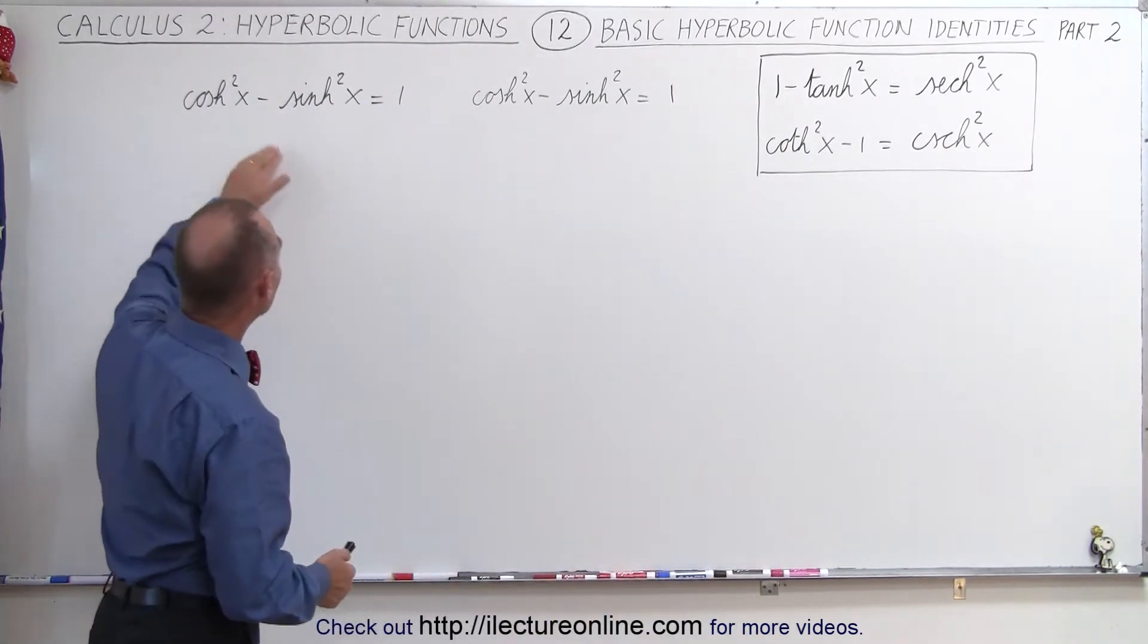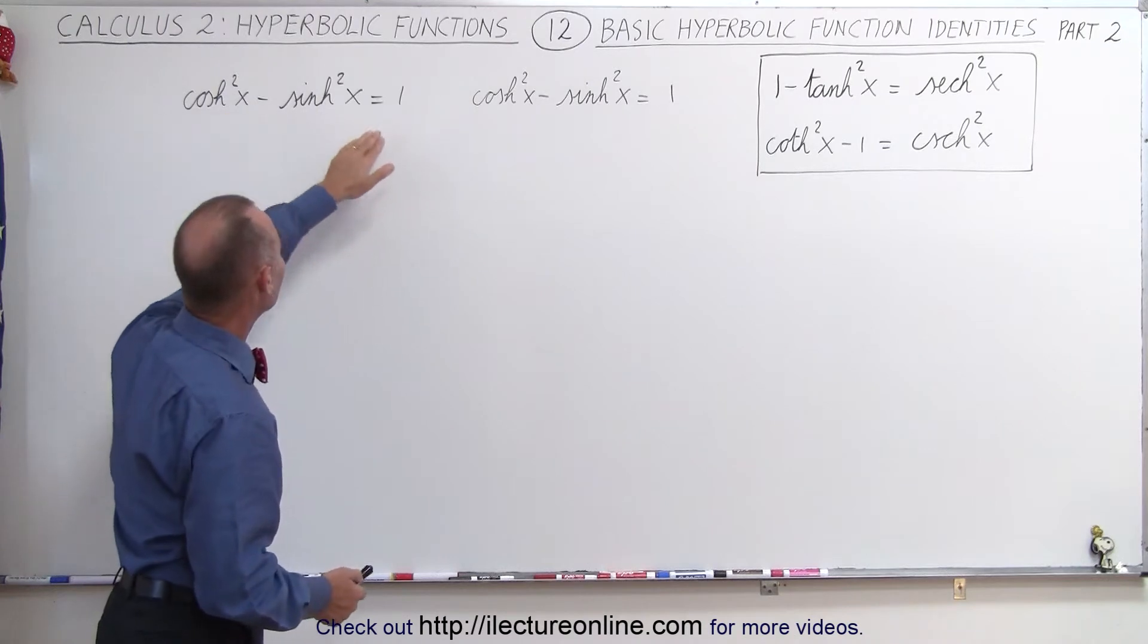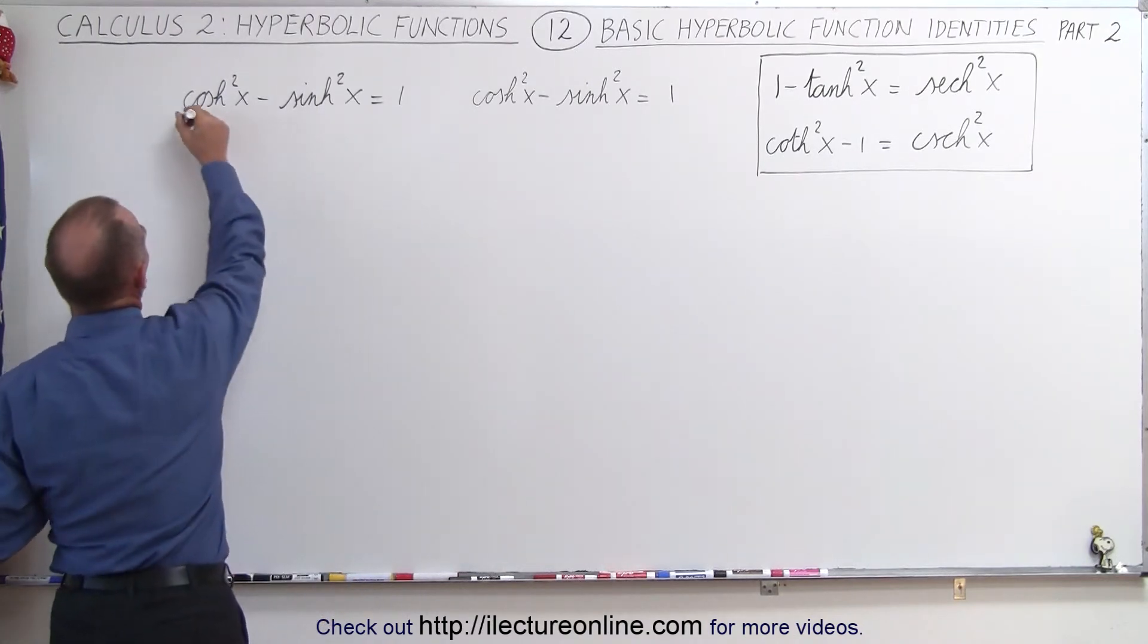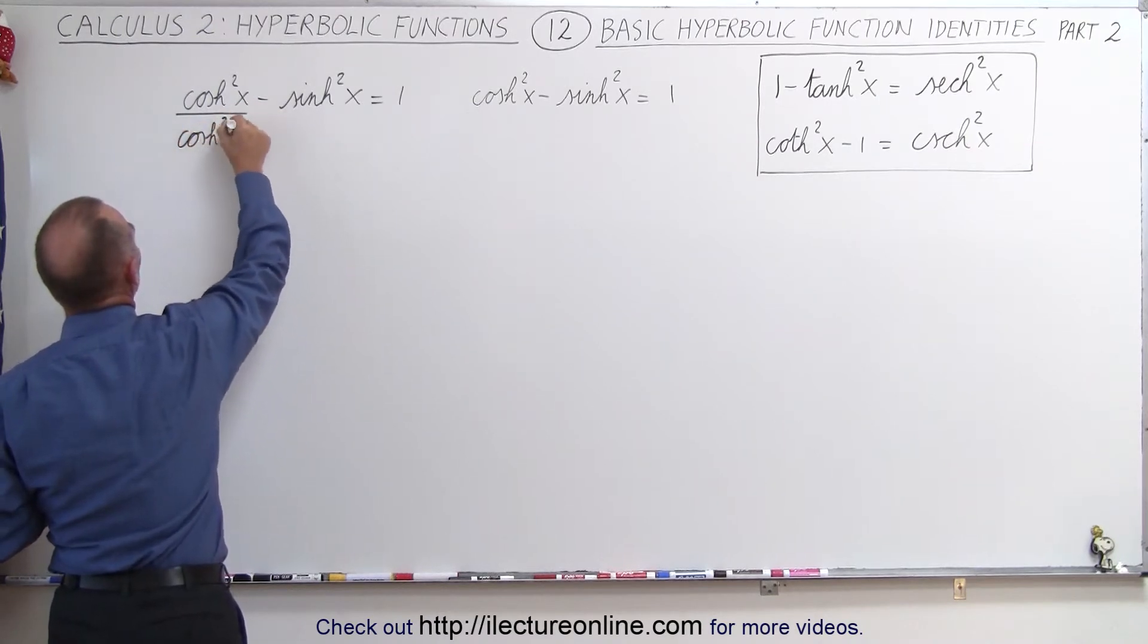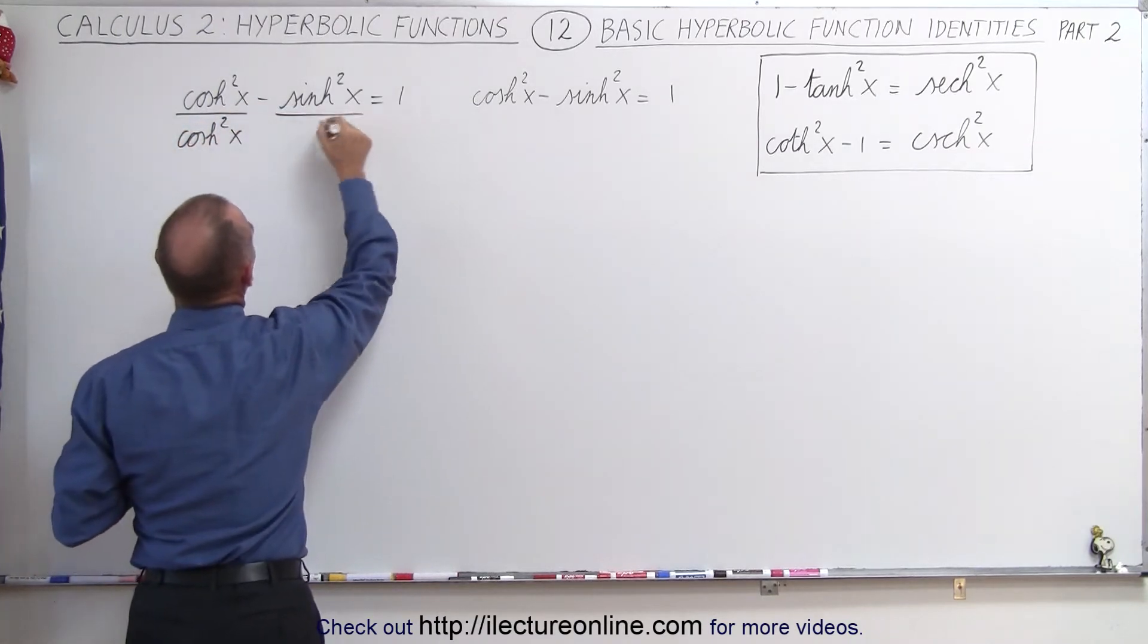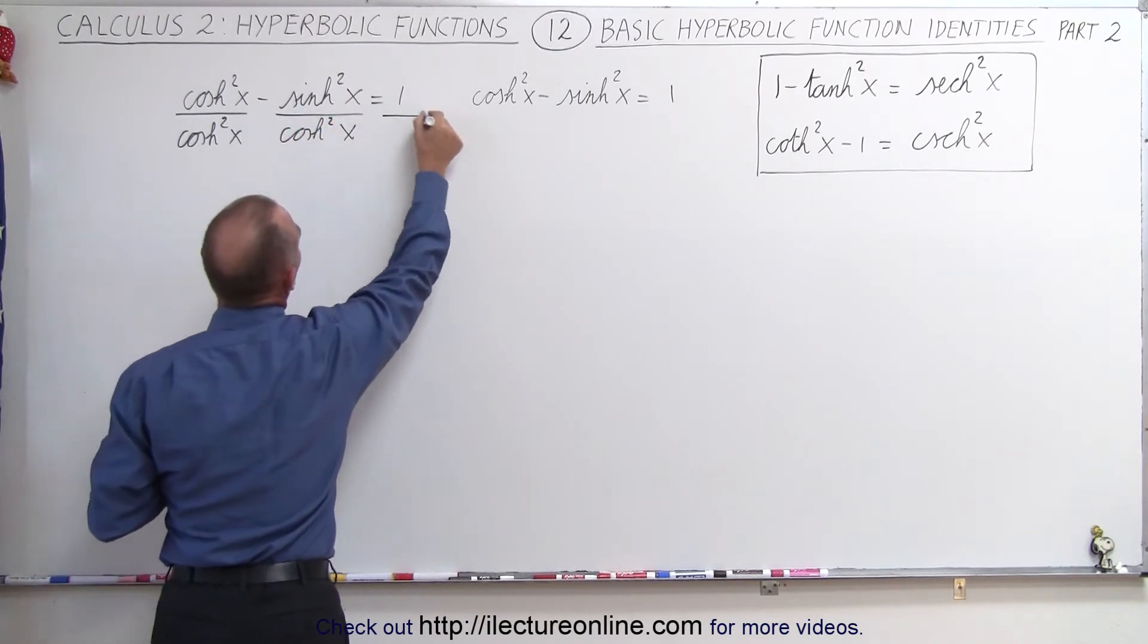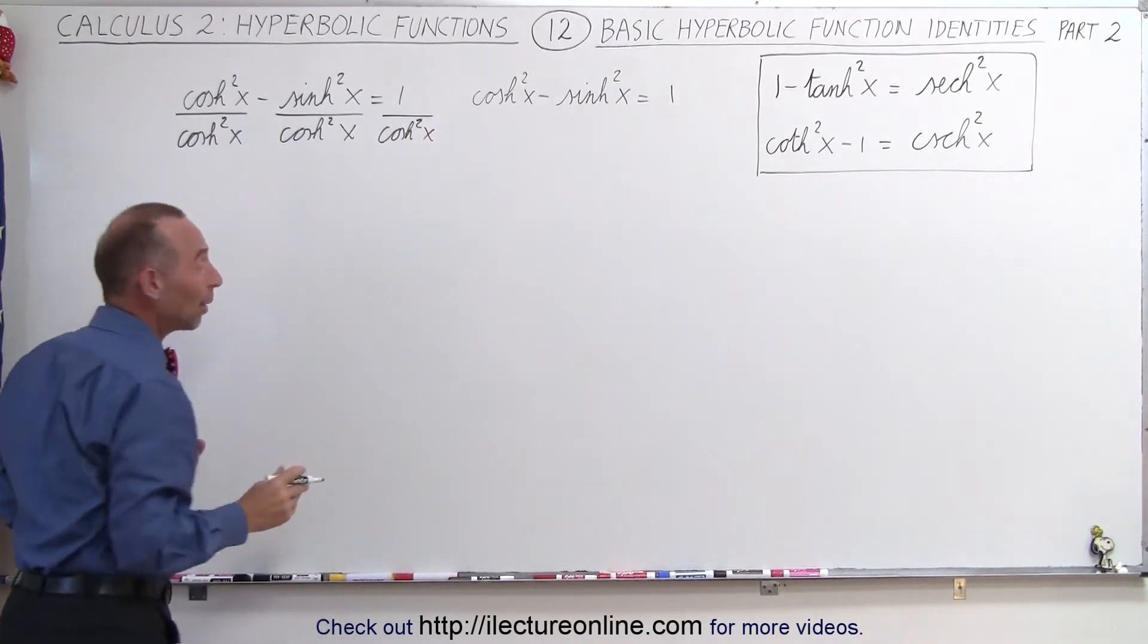To do that, we're going to take this identity and divide every term by the hyperbolic cosine squared of x. So divide this by the hyperbolic cosine squared, and divide this one by the hyperbolic cosine squared, and divide this by the hyperbolic cosine squared of x. Now see what we end up with.